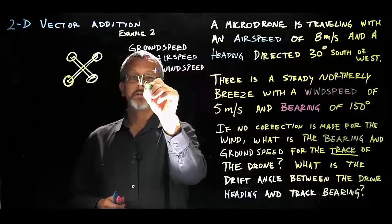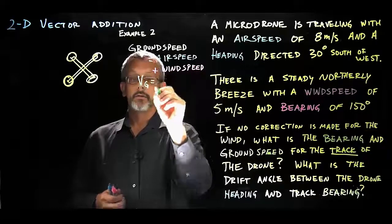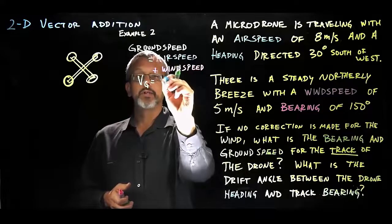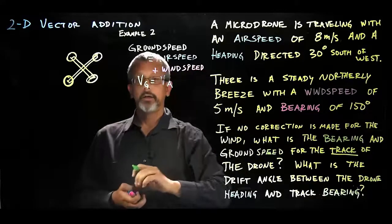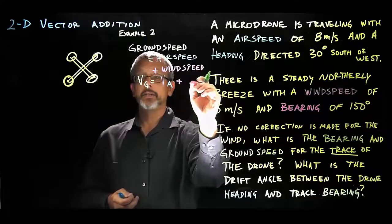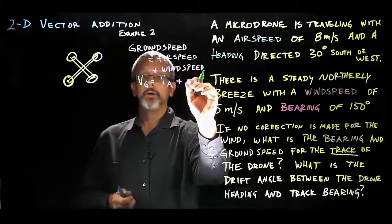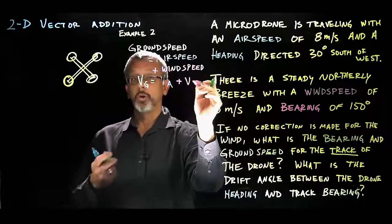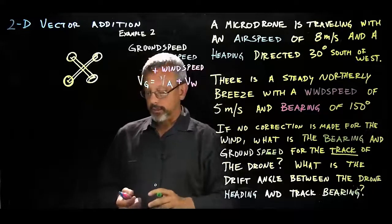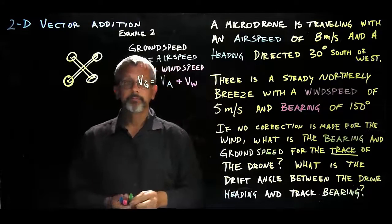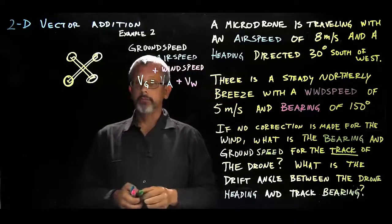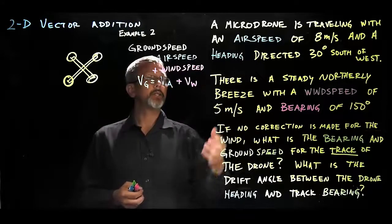The velocity over the ground is equal to the velocity through the air plus the velocity lent to the flying drone from the wind itself. So let's start by drawing what we actually see here.